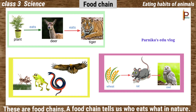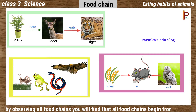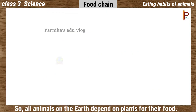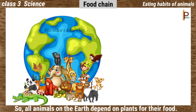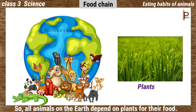These are food chains. A food chain tells us who eats what in nature. All food chains begin from plants, so all animals on the earth depend on plants for their food.